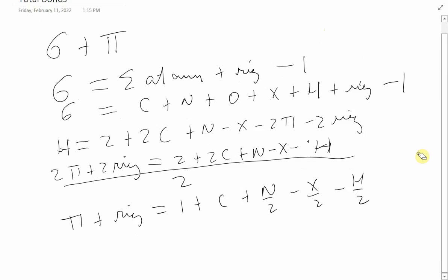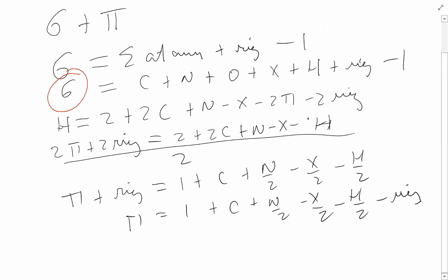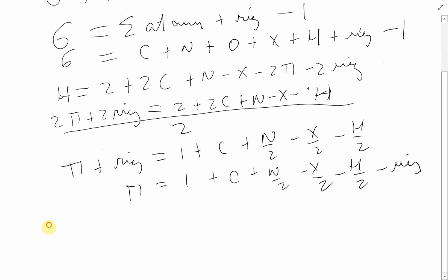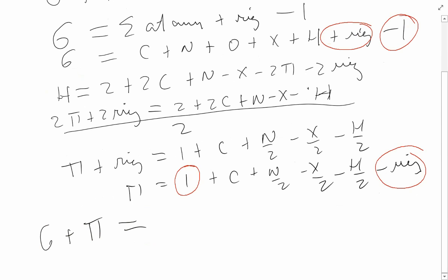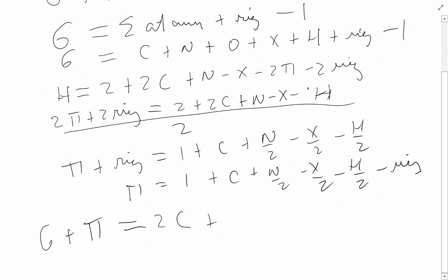Now we can take the cyclomatic formula and rearrange it by moving the rings term to the right side. We now have the equation for sigma bonds and for pi bonds, so we can calculate sigma plus pi — the total bonds in a molecule. When we add the two equations, the first terms cancel out: the minus one and the one cancel, and the ring and minus ring cancel.